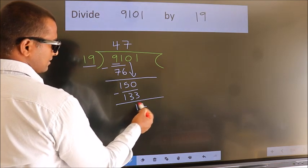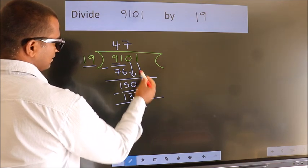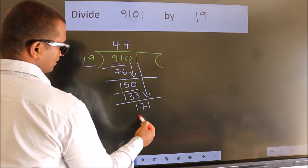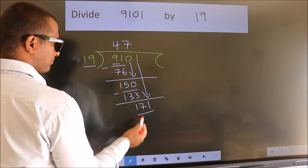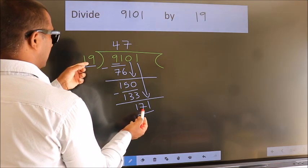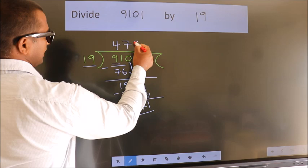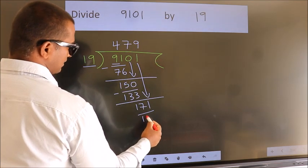After this, bring down the beside number. So, 1 down. So, 171. When do we get 171? In 19 table, 19 nines. 171.